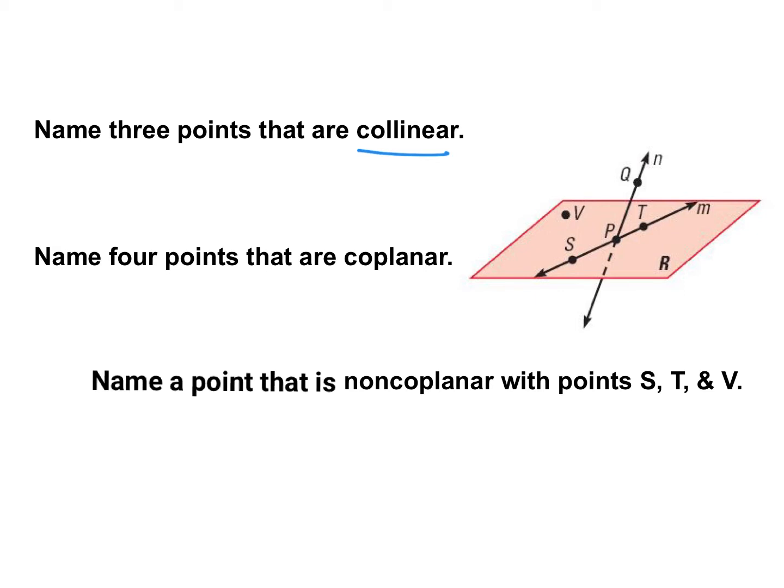And the only three points that are on the same line are going to be S, P, and T. Now, there's other points on the same line, but there's only two of those. We're looking for three points that are on the same line. So for this example, we have S, P, and T.